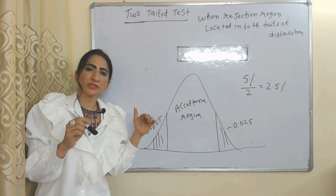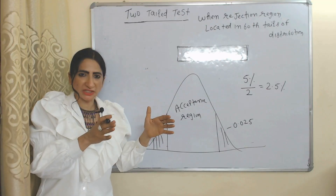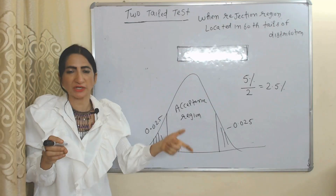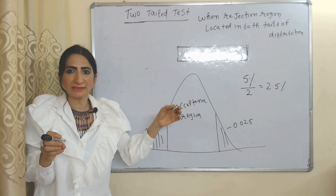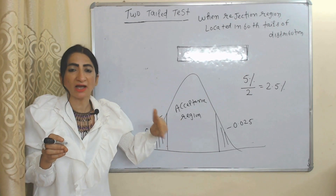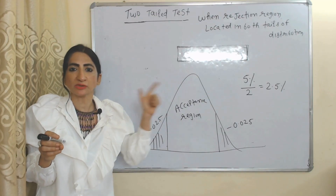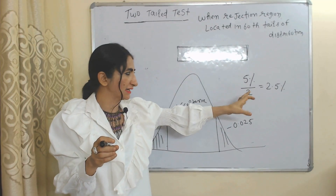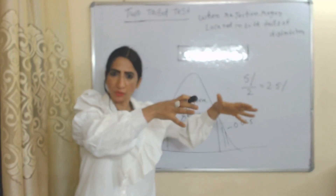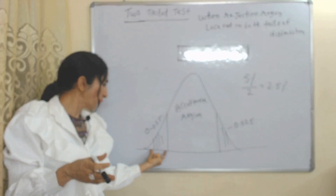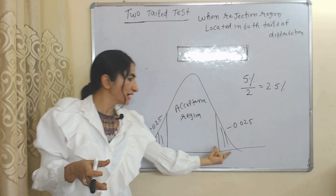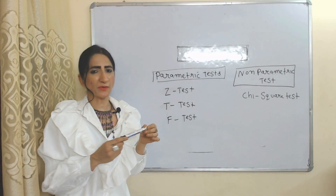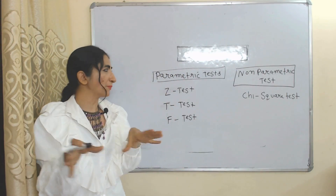Two-tailed test: we use a two-tailed test when the rejection area is located in both tails of the distribution. For example, with a level of significance of five percent, it will be split into two parts — 2.5% on each side.